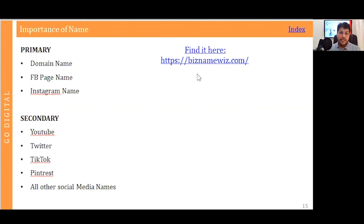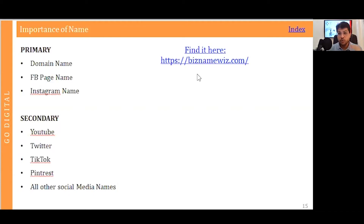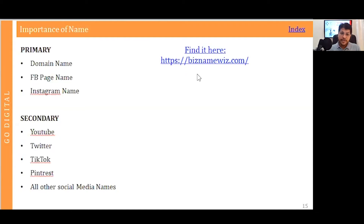After the domain name is finalized, the next step is to create social media pages — Facebook, Instagram, Twitter, and so on. The primary must-do steps in terms of name registration are: the domain name, and the Facebook and Instagram page names. These are the three things you should start with immediately, and then you can move on to your YouTube channel, Twitter, Pinterest, and so on.